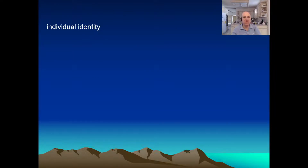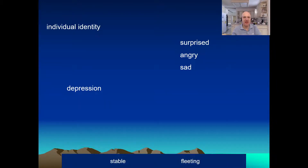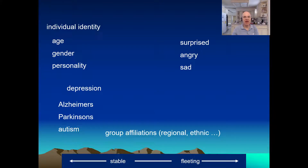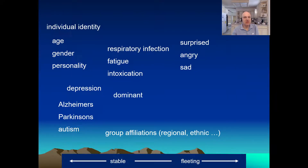Individual identity is one of the things that can be inferred from prosody. We've also seen depression and emotion. Paralinguistics is very diverse. Some paralinguistic properties are very stable, others are very fleeting — some last a lifetime, others last a fraction of a second. Age, gender, and personality all have prosodic correlates. Alzheimer's, Parkinson's, and autism have correlates too. Group affiliations, dialects, and ethnic identity come through in prosody. Respiratory infections, fatigue, and intoxication affect prosody. Whether somebody is dominant or has been assigned as a team leader also comes through — you can mic all members of a work group and from the prosody, to some extent, infer who's likely the team leader.